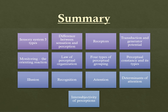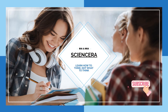With this we came to the end of the unit on sensation and perception. In this unit we learned about the five types of sensory system — visual, auditory, proprioceptive, somaesthetic, and chemical — the difference between sensation and perception, receptors, transduction and generator potentials, monitoring and the orienting reaction, laws of perceptual organization, four types of perceptual grouping, perceptual constancy and its types, illusions, recognition, attention, determinants of attention, and intersubjectivity of perception. Thank you for watching — if you like this video, make sure to subscribe for more.